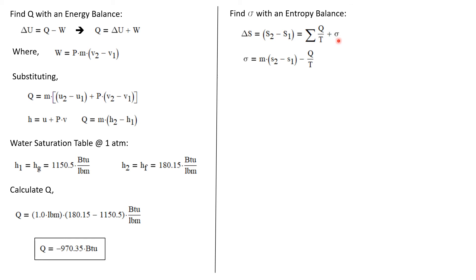Since that's the term we're looking for, let's rearrange and solve for that. Sigma is equal to delta S, which is the mass times the change in specific entropy, minus Q over T. This summation, there's only one heat transfer in this process, so the summation is just this one Q over T term.